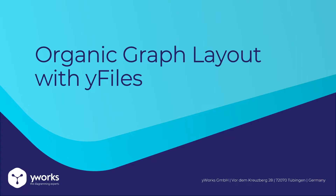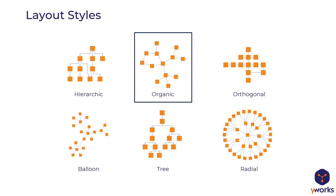Now for the main part of this webinar: the organic graph layout with yFiles. Compared to other layouts, the organic layout's main feature is that it seems to grow naturally. For example, the hierarchic or orthogonal layouts are very rigid — the hierarchic layout assigns nodes to layers. For the organic layout, the idea is that we don't know much about the network structure and let the algorithm decide how to lay it out iteratively, giving it an organic appearance.